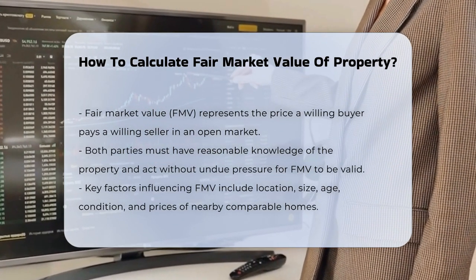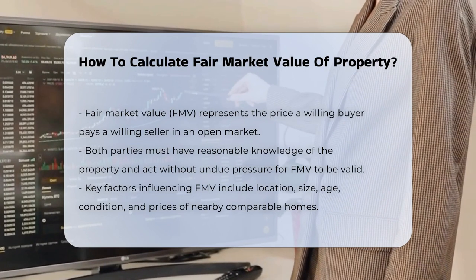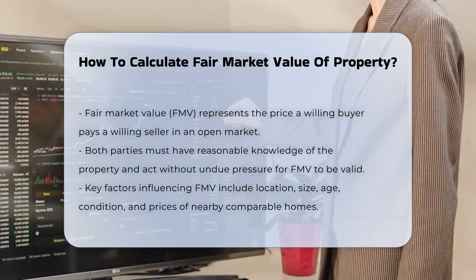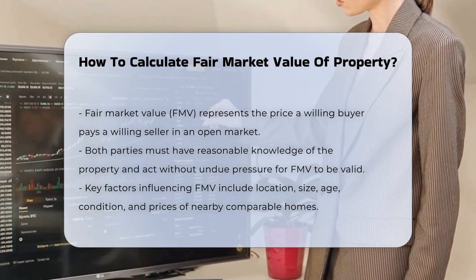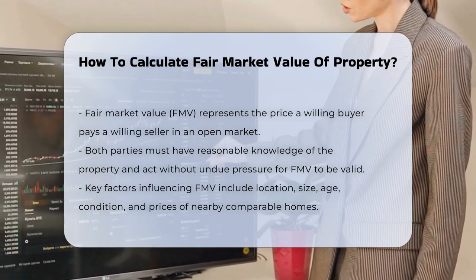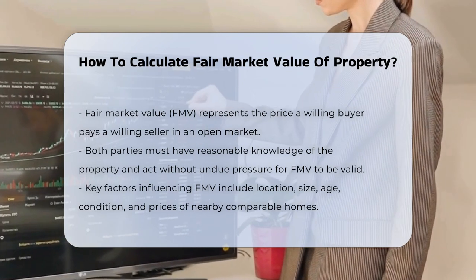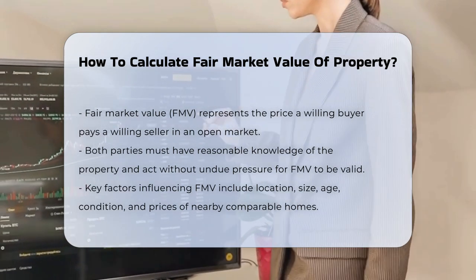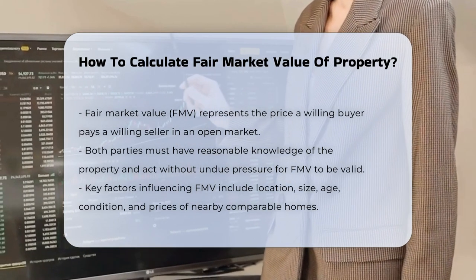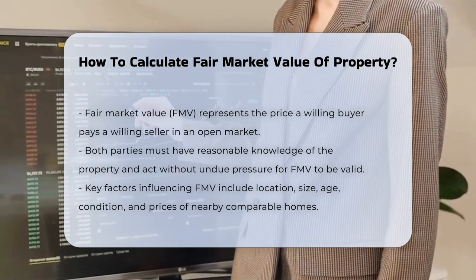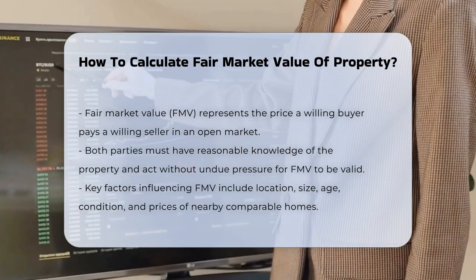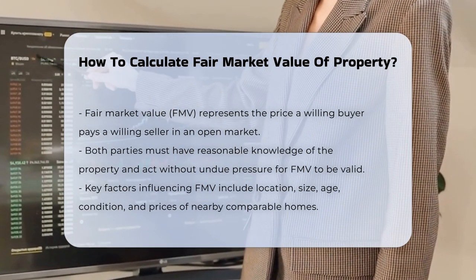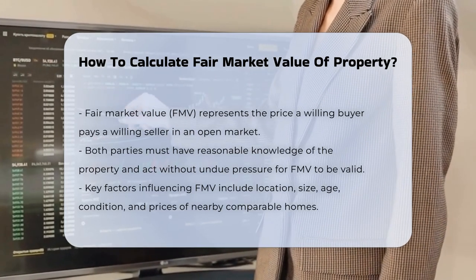Several factors influence the FMV of a property, including its location, size, age, condition, and the prices of nearby comparable homes. Local market trends, supply and demand, and neighborhood amenities such as proximity to schools, public transportation, and retail areas also play significant roles.